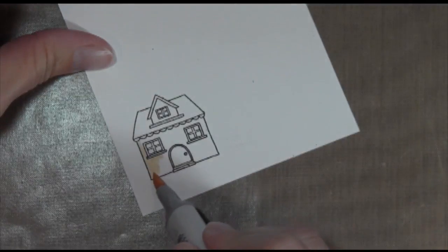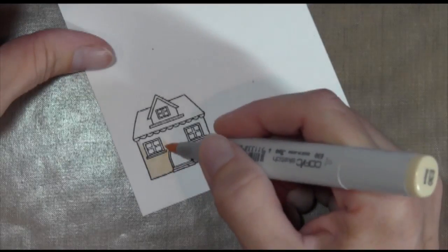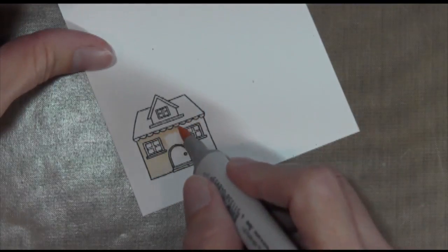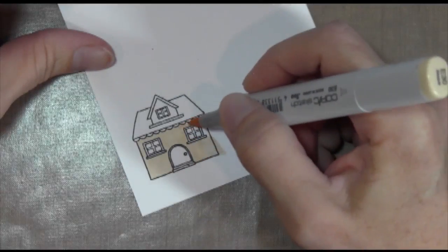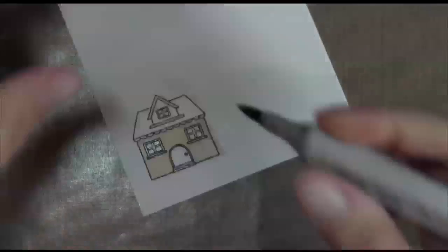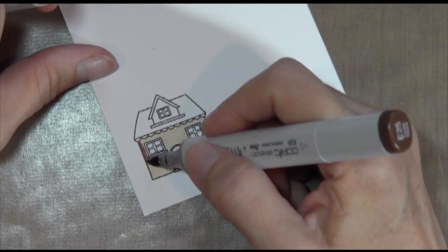I'm taking some Neenah Solar White cardstock and some Memento ink and I'm stamping my house. I'm going to color it with Copic. I'm going to start with my lightest color and I'm going to color all over. I'm not too worried about staying in the lines because I'm going to cut this house out.